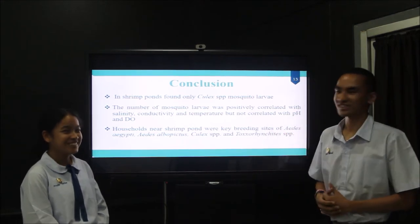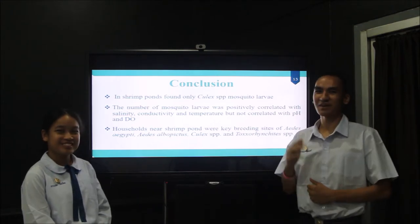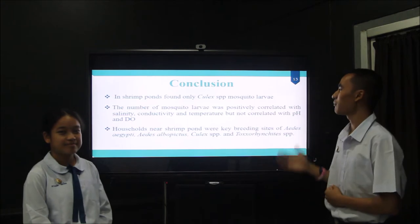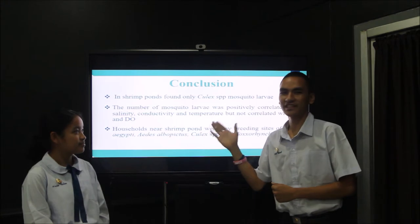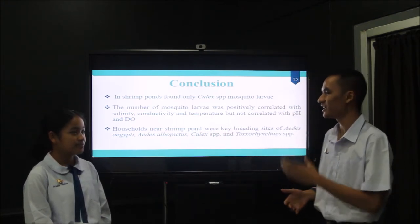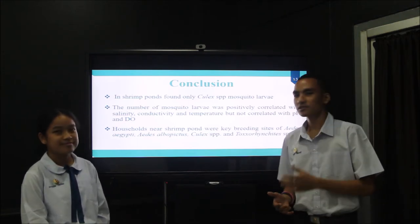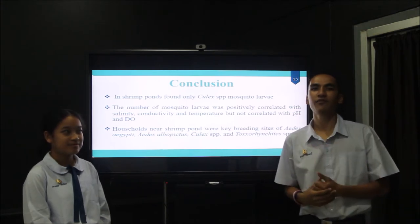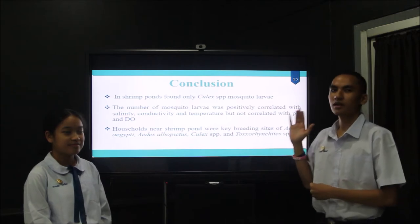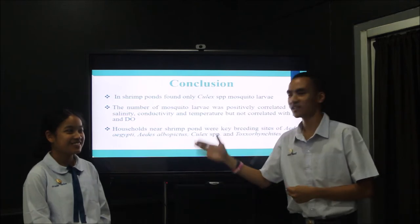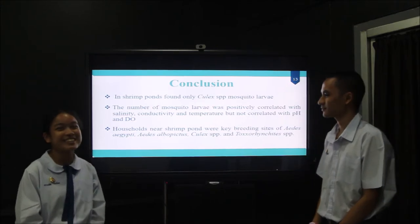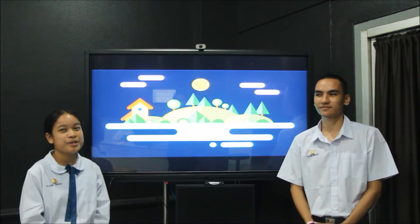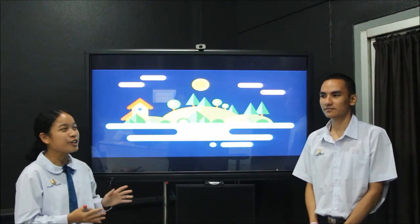Here is our conclusion. In Shimbabwe, only Culex species mosquito larvae were found. The number of mosquito larvae showed a positive correlation with salinity, conductivity, and temperature, but was not correlated with pH and DO. Homes near Shimbabwe were the breeding sites of Aedes aegypti, Aedes albopictus, Culex species, and Toxorhynchites species. Since we found only Culex species in Shimbabwe, this means dengue fever does not come from the Shimbabwe, but from household breeding sites near the Shimbabwe. We can prove that dengue fever is not coming from the Shimbabwe.